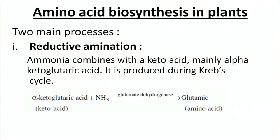The first process for amino acid synthesis in all plants is reductive amination. In this process, ammonia combines with a keto acid — mainly alpha-ketoglutaric acid, which is generated from the Krebs cycle (also called the TCA cycle). This keto acid combines with ammonia in the presence of the enzyme glutamate dehydrogenase to form glutamic acid, which is one of the chief amino acids in plants.